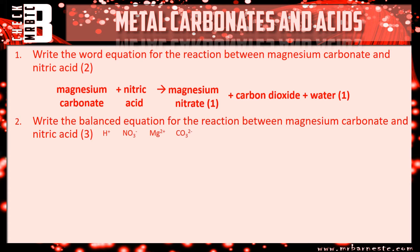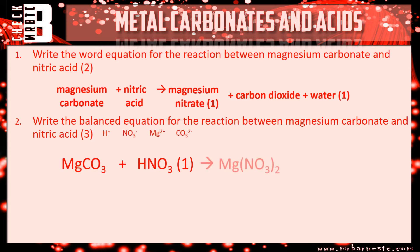Question two: write the balanced equation for the reaction between magnesium carbonate and nitric acid. Magnesium has a formula of Mg²⁺ and carbonate is CO₃²⁻ — the charges are already balanced, so the formula for magnesium carbonate is MgCO₃. Nitric acid is HNO₃ — you can work that out from the charges H⁺ and NO₃⁻, one plus and one minus, already balanced. For magnesium nitrate, Mg²⁺ and NO₃⁻ means you need two nitrates to balance the 2+ on magnesium — it's a compound ion so put it in brackets: Mg(NO₃)₂.